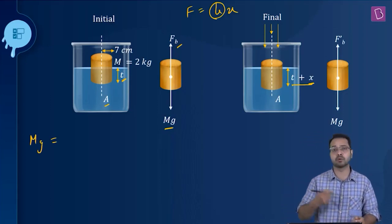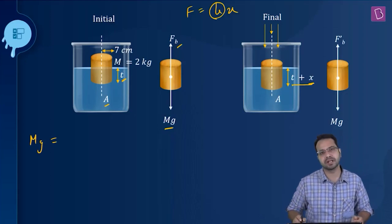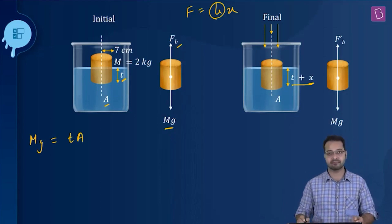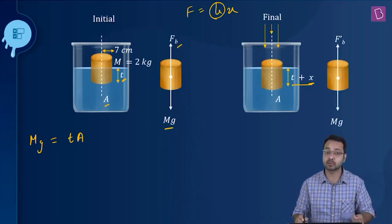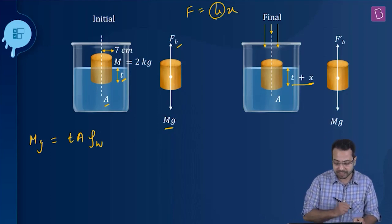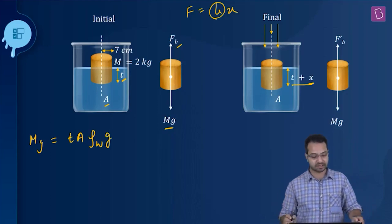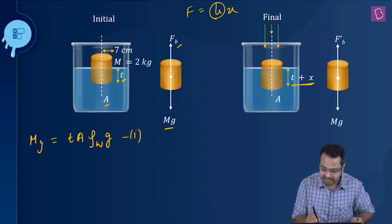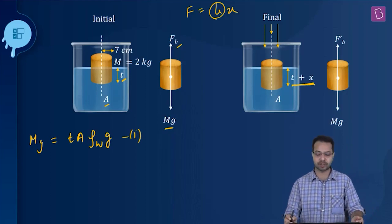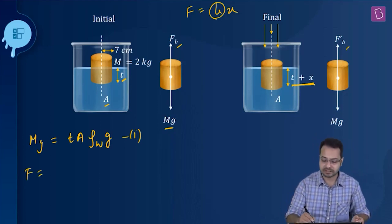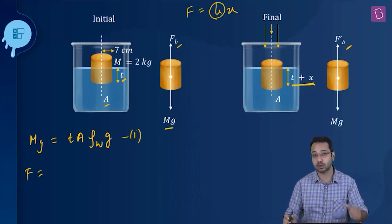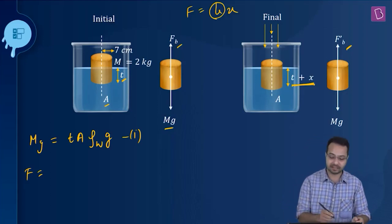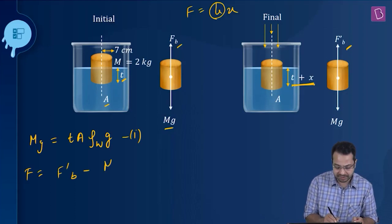When depressed by x, the new submerged volume is (t + x) × A, so the new buoyant force F′_b = (t + x) × A × ρ_water × g, which is greater than before since more volume is submerged. The net restoring force is F′_b − mg.